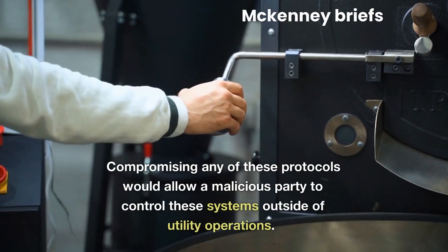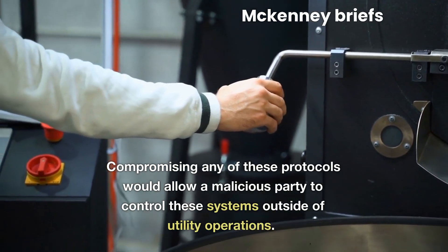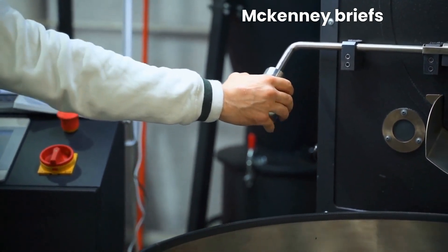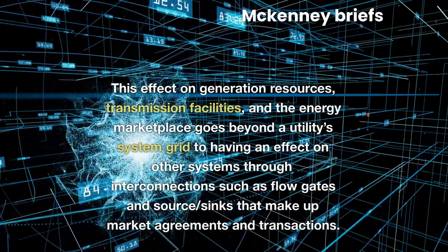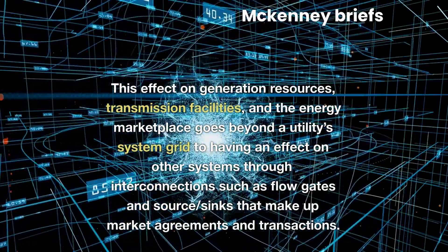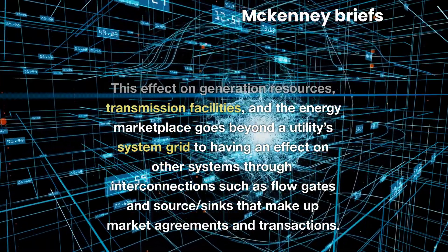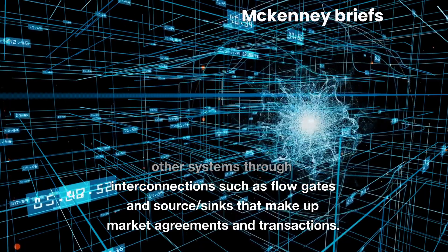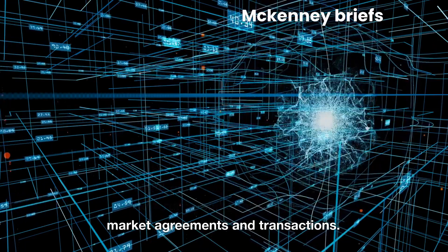This effect on generation resources, transmission facilities, and the energy marketplace goes beyond a utility system grid to having an effect on other systems through interconnections such as flow gates and source-sink arrangements that make up market agreements and transactions.